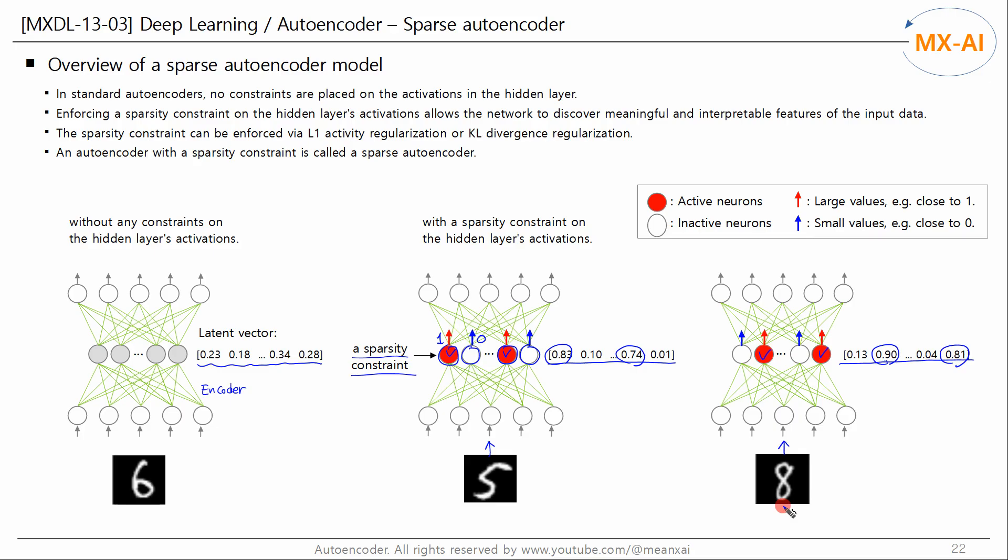This can be a great help for neural networks to learn from data. The sparsity constraint can be enforced via L1 activity regularization or KL divergence regularization. An autoencoder with a sparsity constraint is called a sparse autoencoder.